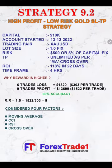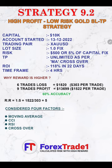We will understand how this strategy is working, through which capital, and how many days it has taken to achieve the target — everything we will see. This is Strategy Number 9.2: High Profit Low Risk Gold with SL and TP. The initial capital is ten thousand dollars.